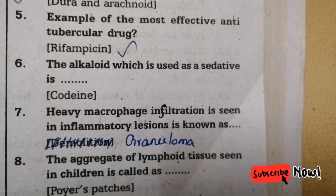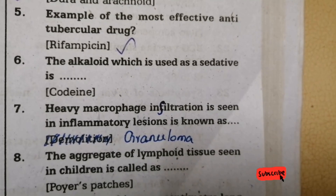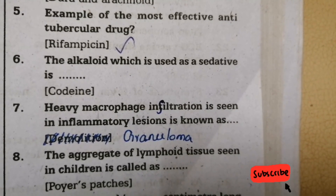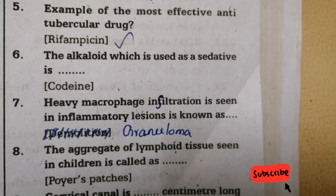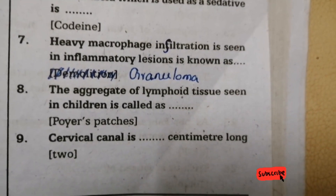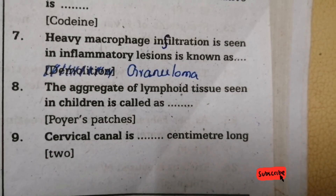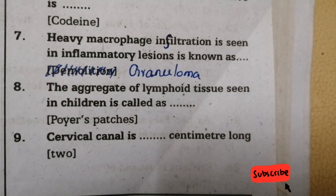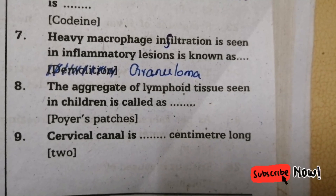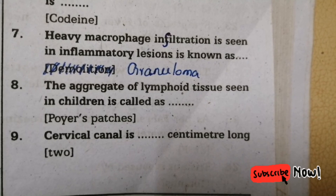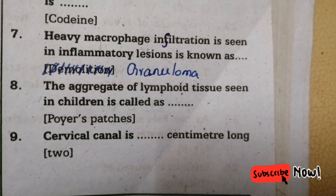Seventh one: heavy macrophage infiltration seen in inflammatory lesions is known as — answer is granuloma. Eighth one: the aggregate of lymphoid tissue seen in children is called — answer is Peyer's patches. Ninth one: cervical canal is how many centimeters long? Answer is 2 centimeters long.